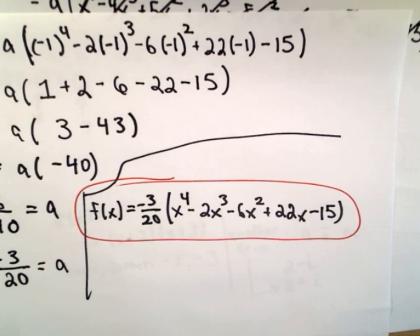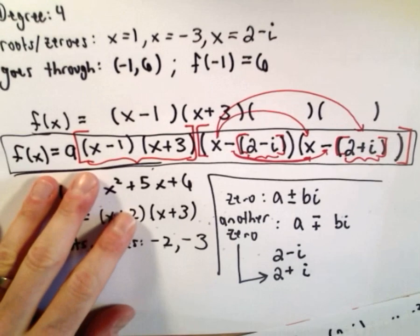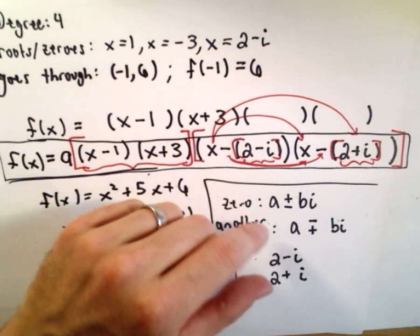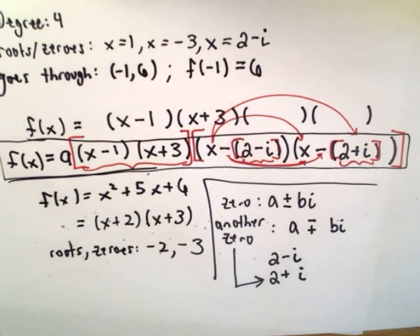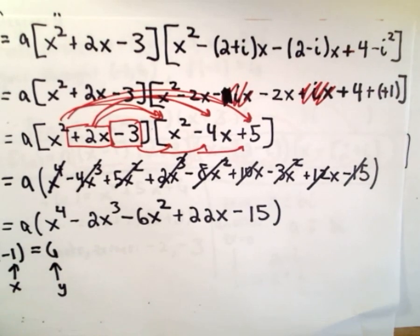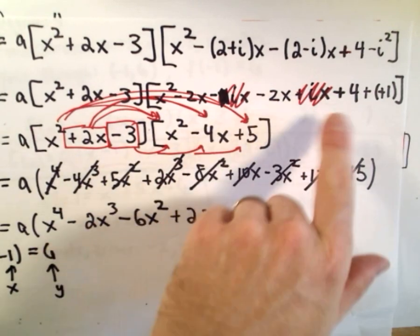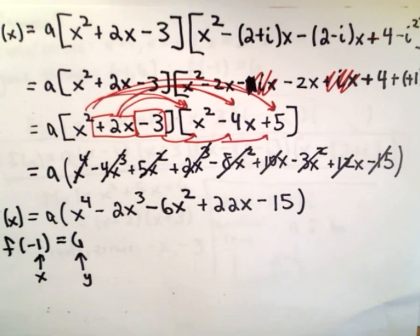The only thing that's really different about these problems when you have complex numbers is you just have to remember the conjugate zero pair. After that, it's just that the arithmetic is a lot worse — that's all there is to it. I even made a little mistake, so it happens. Just take your time and be careful. Someone had requested this video, so I hope it helps and makes sense. Good luck.